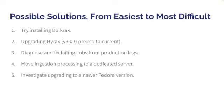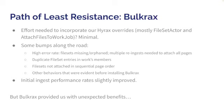We also looked at whether we needed a whole different server — and I loved hearing the CARP method presentation earlier — as well as whether newer Fedora versions coming down the pipeline might solve our issues. Since that's still in the pipeline, we couldn't really do anything with that. So we focused first on Bulkrax. We do have customizations, mostly in the file set actor as well as the attached files to work job portions of both Hyrax and Bulkrax, and we were able to get it moving fairly easily.